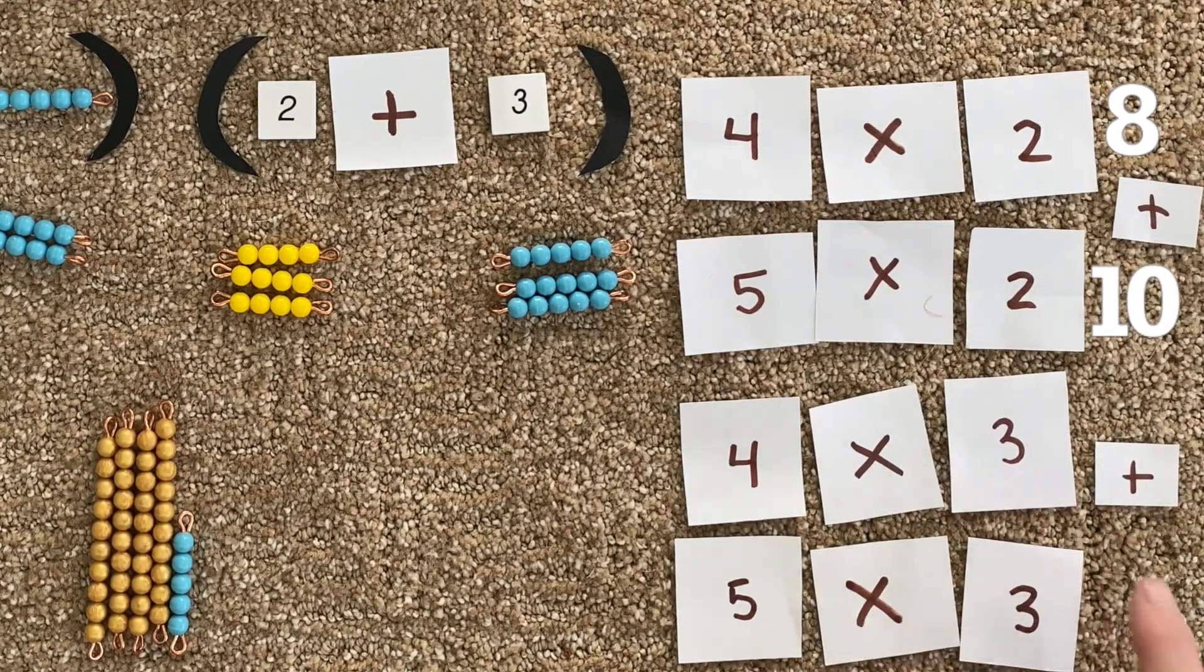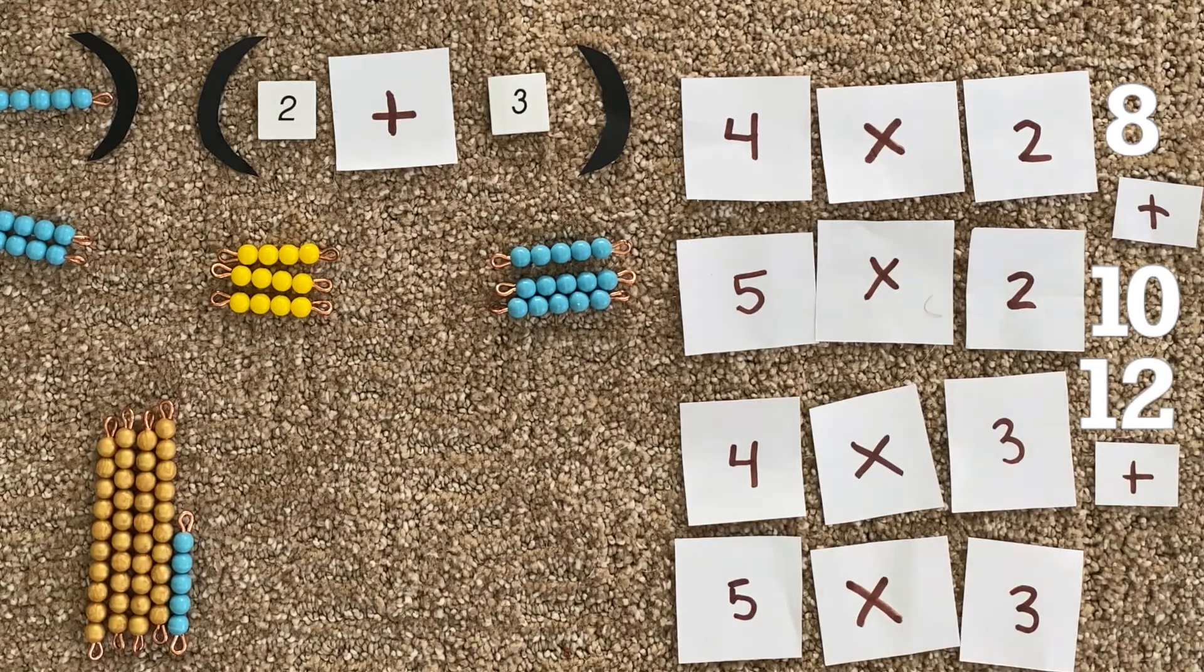What's four times three? Twelve. And what's five times three? Fifteen.